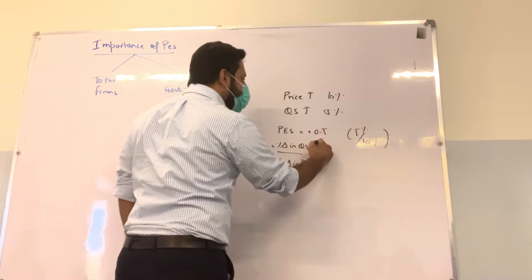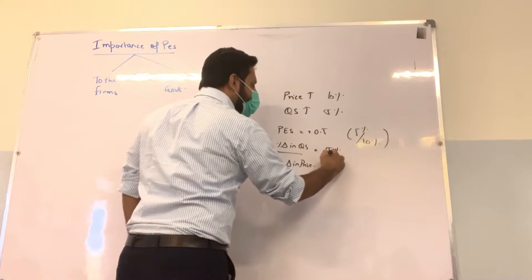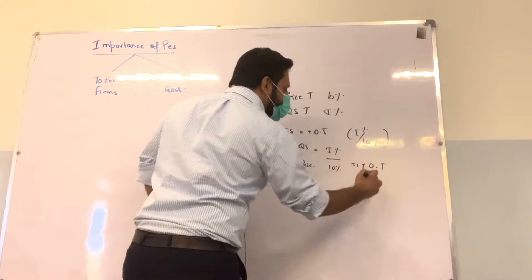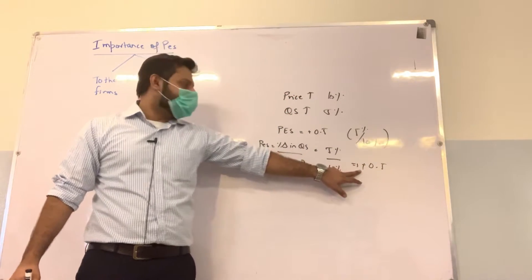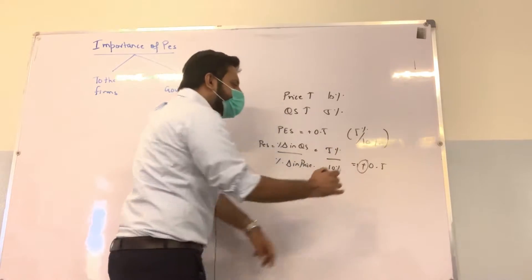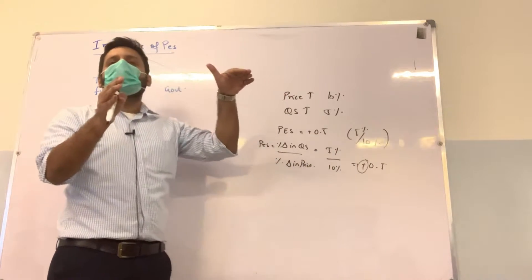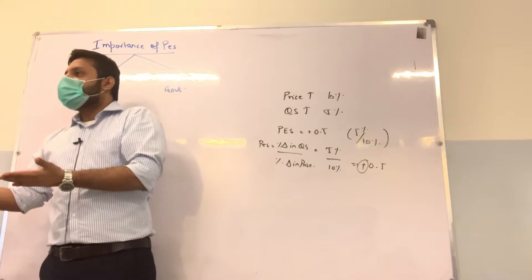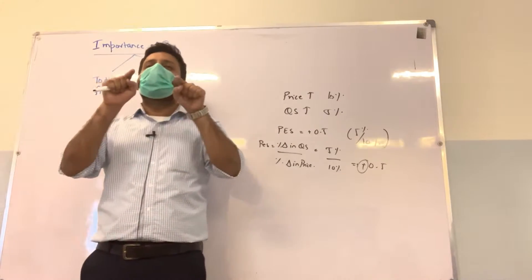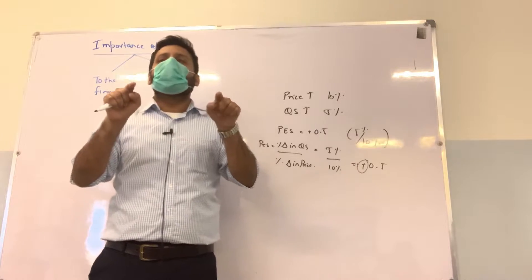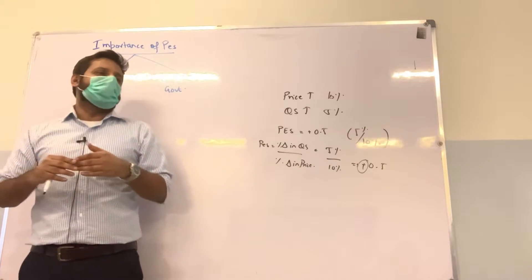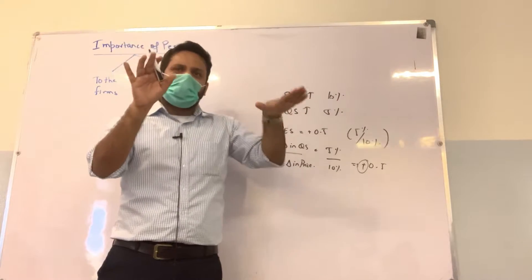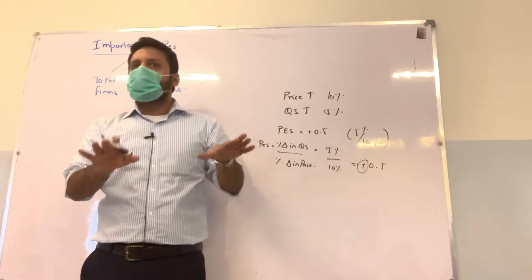The answer here is plus 0.5. The positive sign indicates a positive or direct relation between price and quantity supplied, because both are directly proportional. When price rises, quantity supplied rises; when price falls, quantity supplied falls.